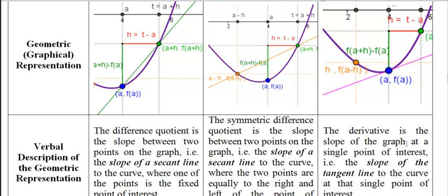The derivative is the slope of the graph at a fixed point, at a single fixed point of interest. In other words, it is the slope of the tangent line to the curve at that single point of interest.